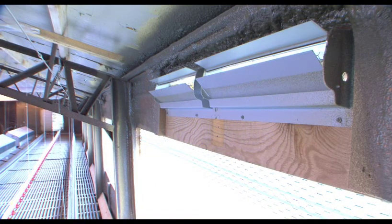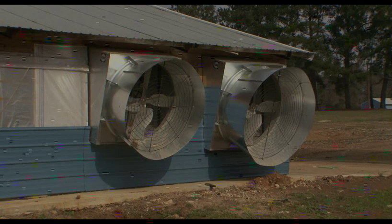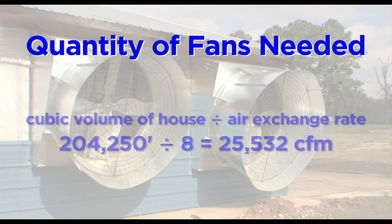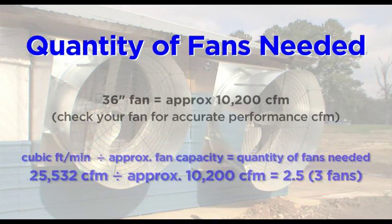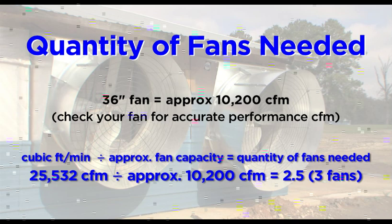Now that we have the cubic volume of the house, let's discuss how to calculate the number of fans and TJP inlets needed during minimum ventilation. First, we need to determine the number of fans needed at actual working pressure. For the first stage, fan volume should equal 1 air exchange every 8 minutes, to run on a cycle timer and temperature override. To determine the number of fans needed, take the cubic volume of the house and divide by 8, then divide by how much air one fan can displace — a 36-inch fan can displace 10,200 cubic feet per minute. Always round up or down to the nearest whole number. You need 3 fans for this house for the first stage of minimum ventilation.